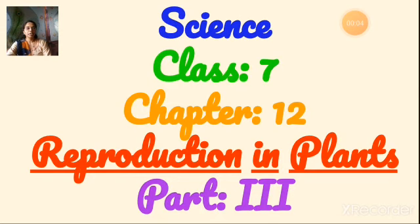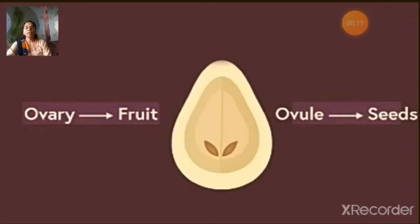In our previous video, we learned about the fertilization process. This process helps in formation of fruits and seeds. After fertilization is successfully accomplished, the ovary develops into a fruit and the ovule develops into seeds.